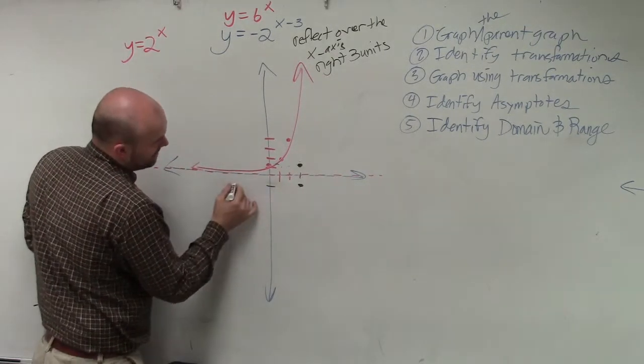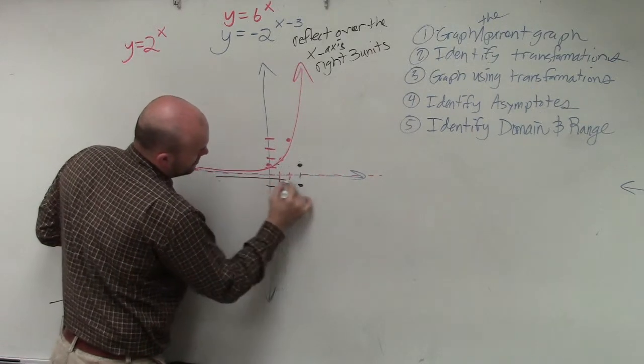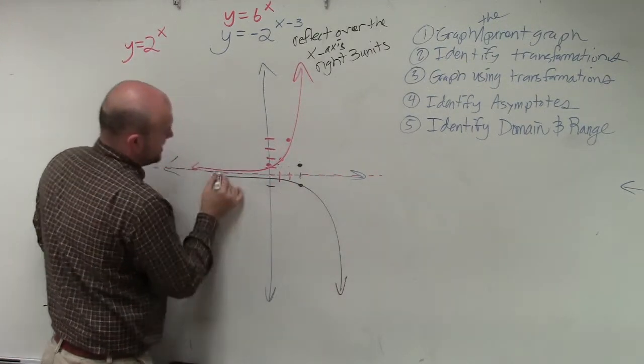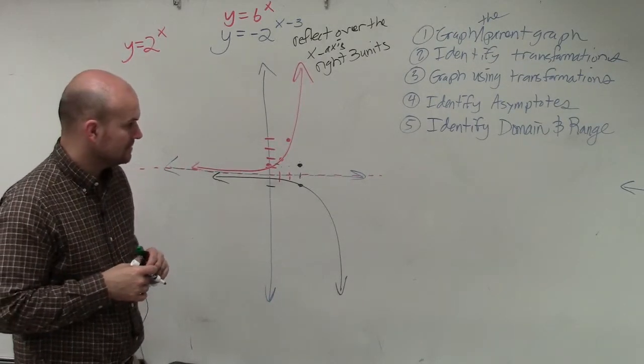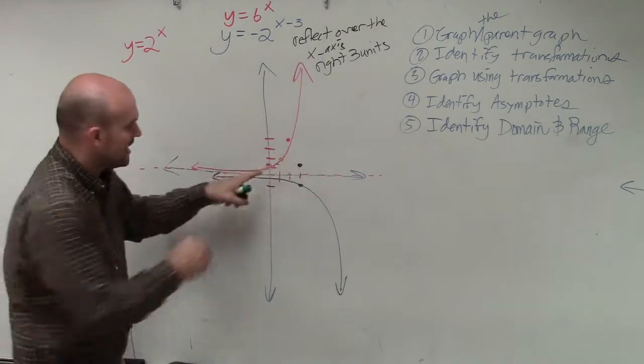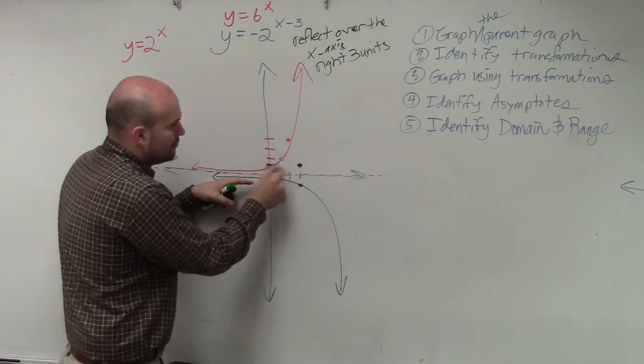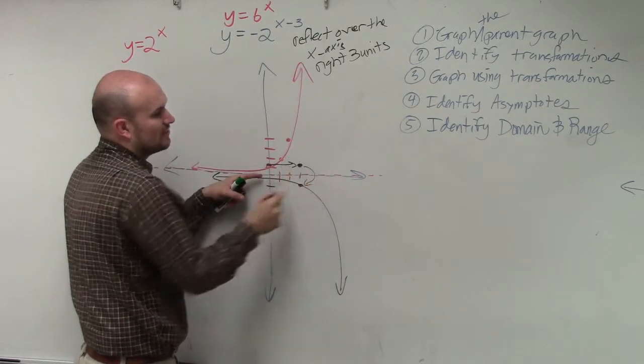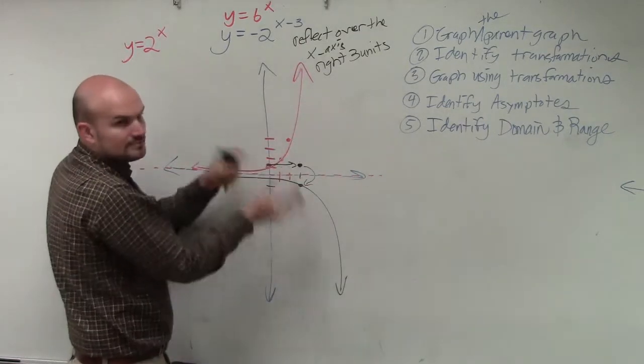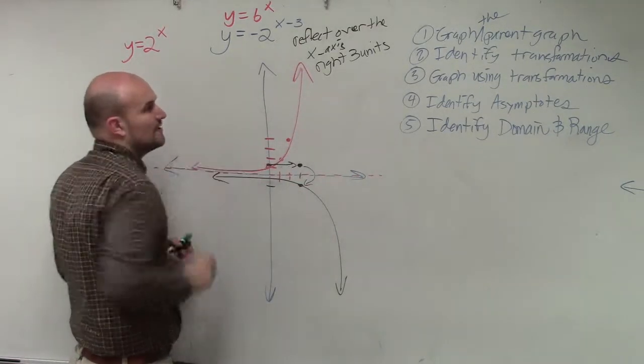Therefore, my graph is now going to look something like that. I reflected this point. I took this point and moved it three units to the right. Then I reflected it over the x-axis, flipped it over because that's what the reflection does.